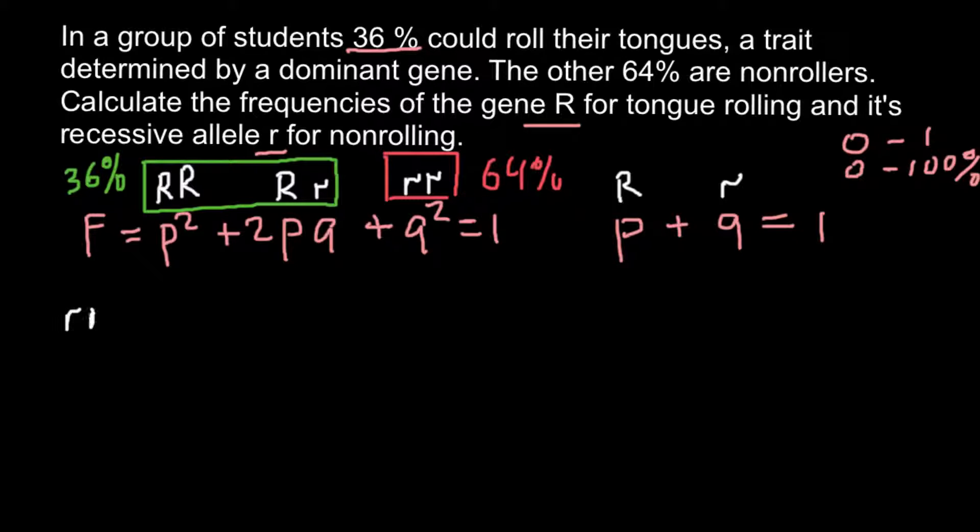We can say that small r small r genotype would equal q squared and would equal 64%. If we use the different scale between zero and one, we can say that 64% equals 0.64.